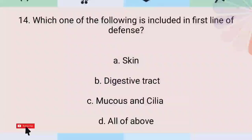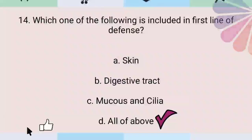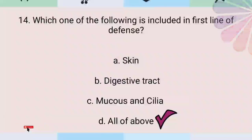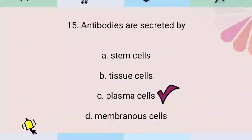Which one of the following is included in the first line of defense? All of the above. Antibodies are secreted by plasma cells.